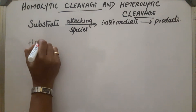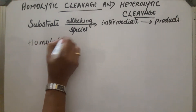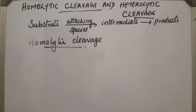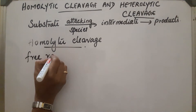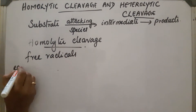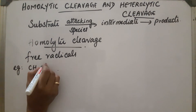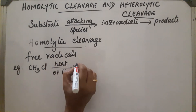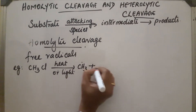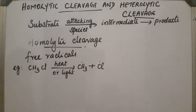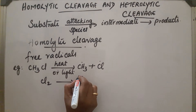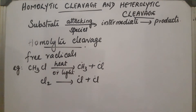In homolytic cleavage, the intermediates obtained are free radicals. For example, CH3Cl in the presence of heat or light gets converted into CH3 radical and Cl radical. Another example is Cl2, which similarly gets converted into two Cl radicals.